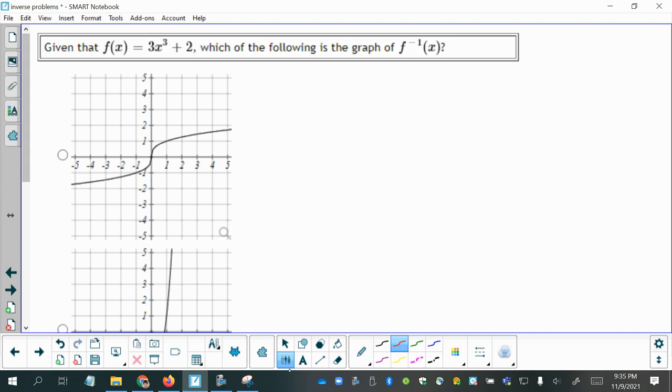All right, so what we want to do, the easiest and fastest way to do these since they are multiple choice, is to start by making a table of ordered pairs for the given function. And keep your values that you're going to use simple and small. So I'm going to try negative 1, 0, and 1.